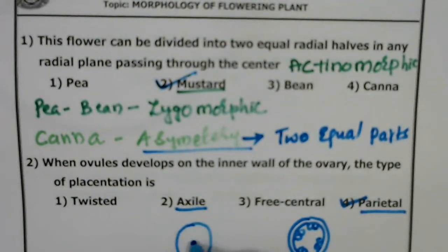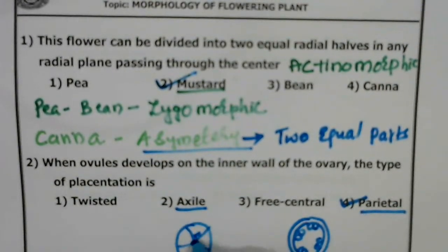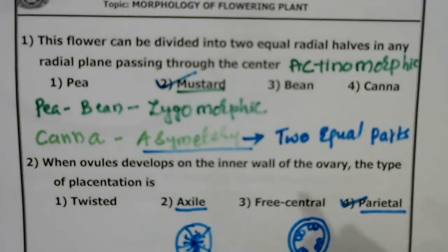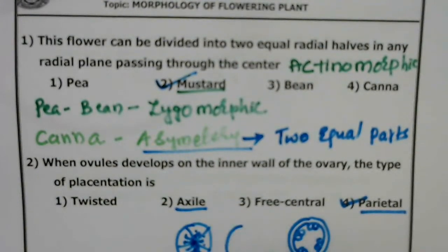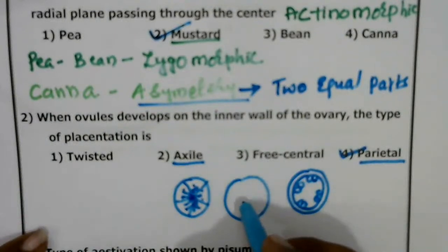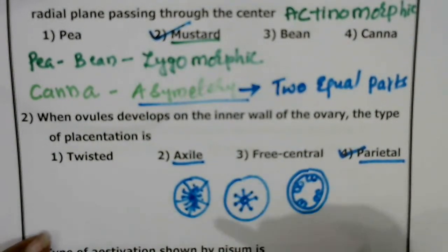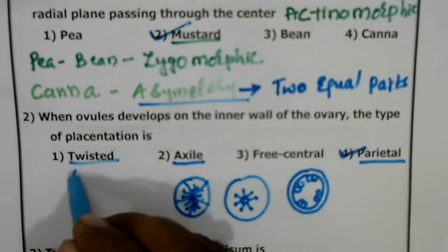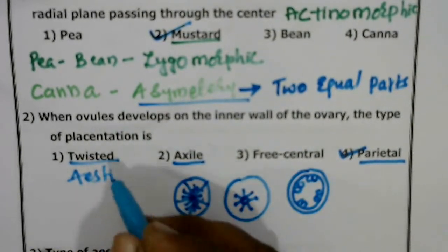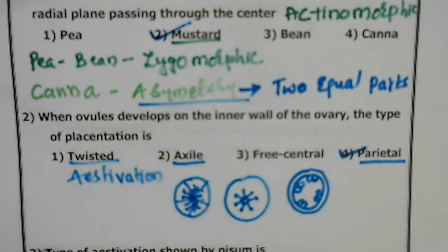This type of placentation is called parietal. Whereas in axile placentation, the ovules are borne on the central axis. In free central placentation, the ovules are arranged on a central column — the false septum is absent. The correct answer is parietal placentation.